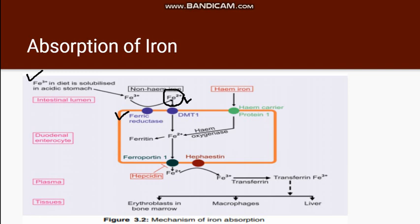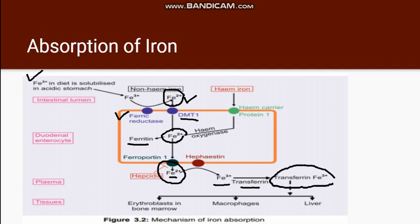The ferrous form is now transported into the enterocyte with the help of DMT1 — the divalent metal transporter 1. The ferrous form which is in excess gets converted into ferritin. However, the other iron which is needed for the body is transported into the plasma. In plasma, the ferrous form again converts itself into ferric form, and this ferric form binds to a glycoprotein known as transferrin. Transferrin binds to the iron and then takes it to the required areas.